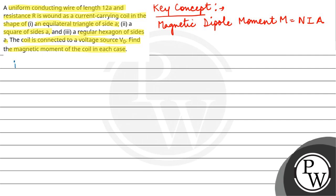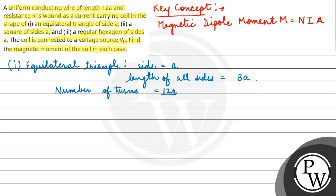Our first case is equilateral triangle. Equilateral triangle with side A. If side is A, then length of all sides will be A plus A plus A equals 3A. Number of turns will be total length 12a upon 3a, that is 4.